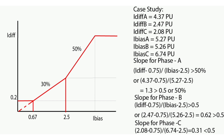The slope can be calculated to check whether it is greater than 50% for all phases. For phase A, the slope is calculated by the formula: (I_differential minus 0.75) divided by (I_bias minus 2.5), which must be greater than 0.5. Here, differential current for phase A is 4.37 per unit and bias current is 5.27 per unit. So slope equals (4.37 minus 0.75) divided by (5.27 minus 2.5), which equals 1.3 — greater than 0.5. The differential current for phase A remains beyond the 50% region, in the tripping zone.